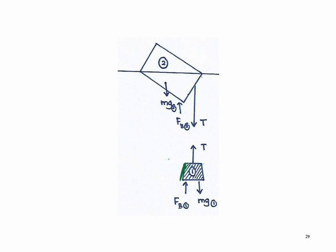We have the weight of block B acting downward. Because it is fully submerged in water, it will create a force of buoyancy. At the same time, the weight of the object also acts on the object. Because this weight is hung with a rope to the floating device, we can draw a tension acting upward.